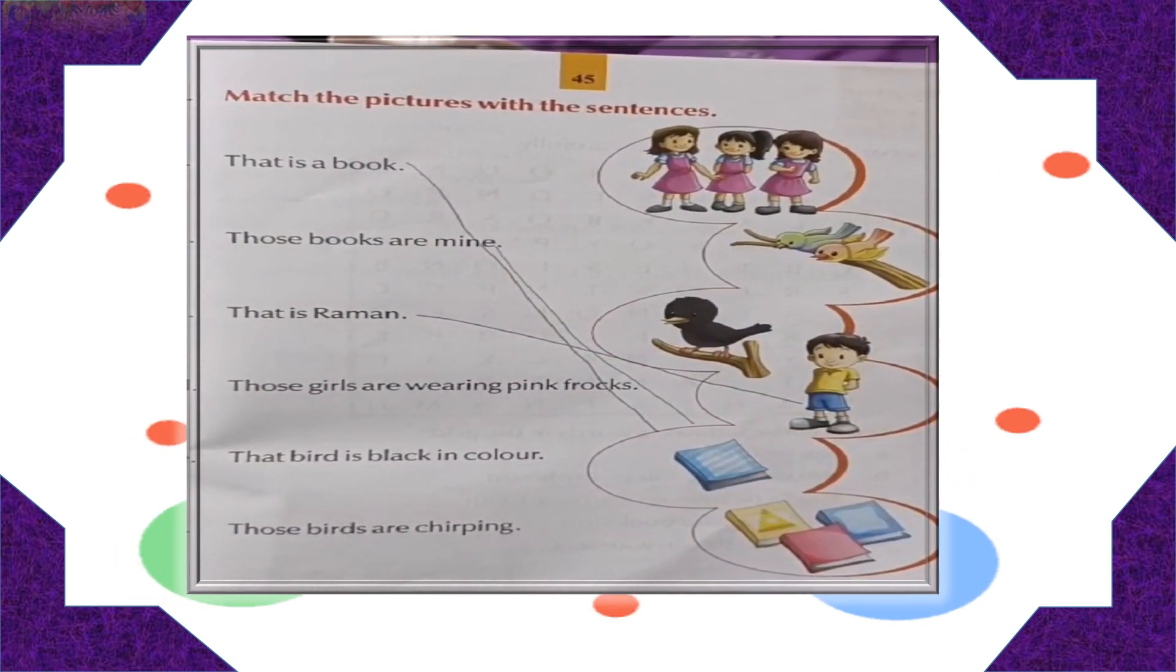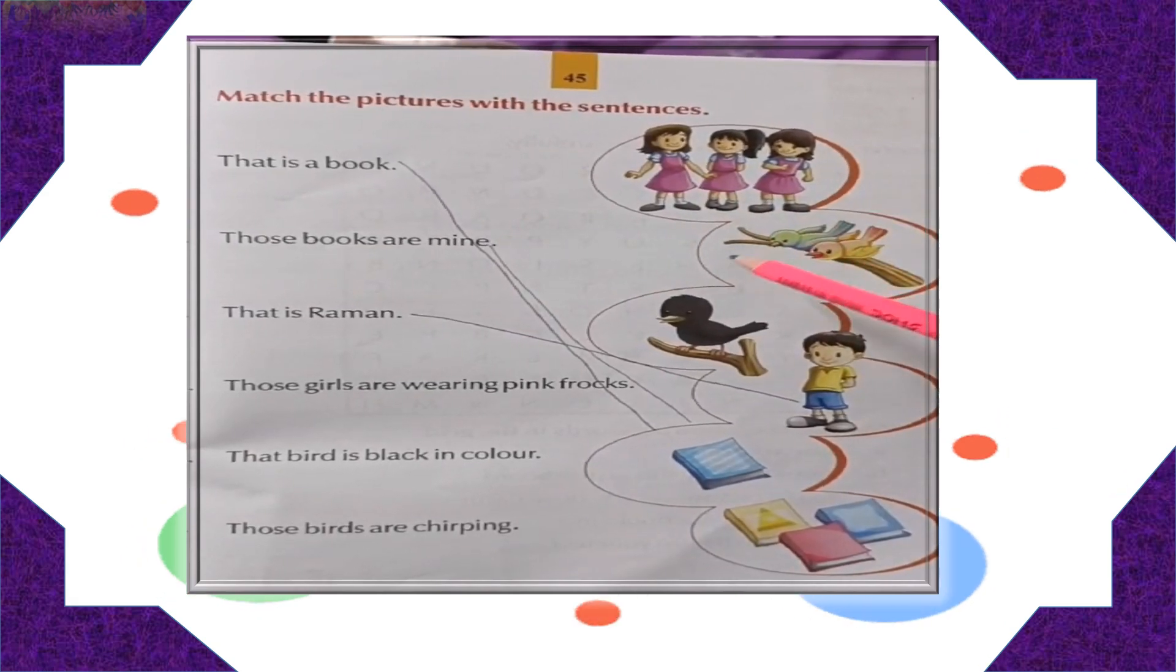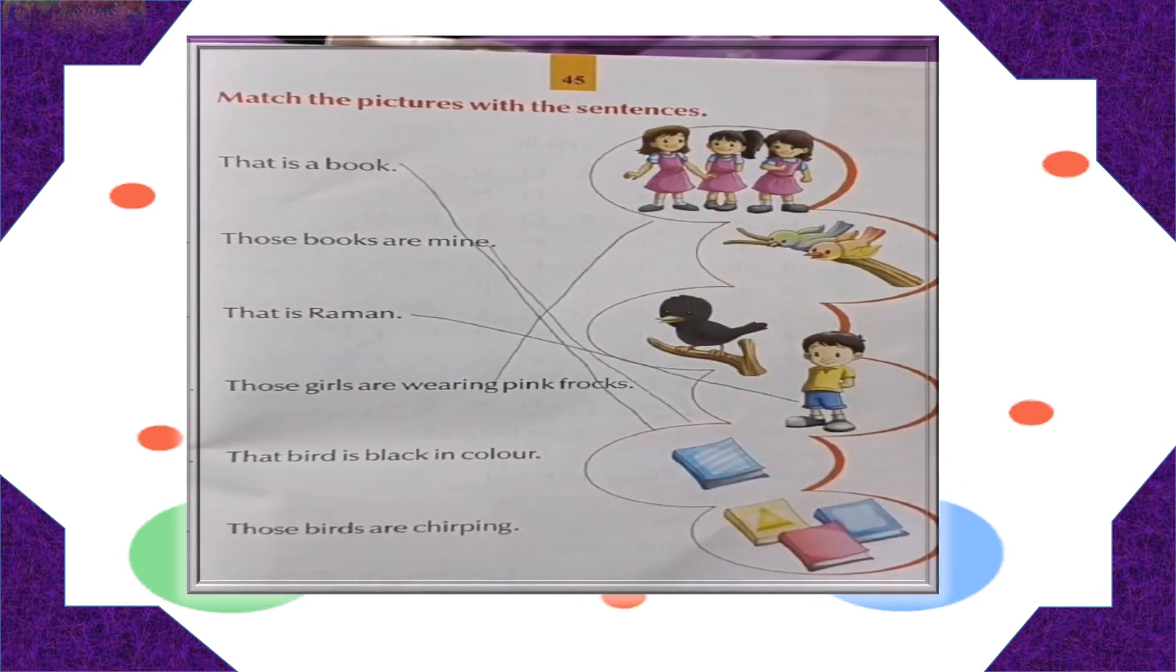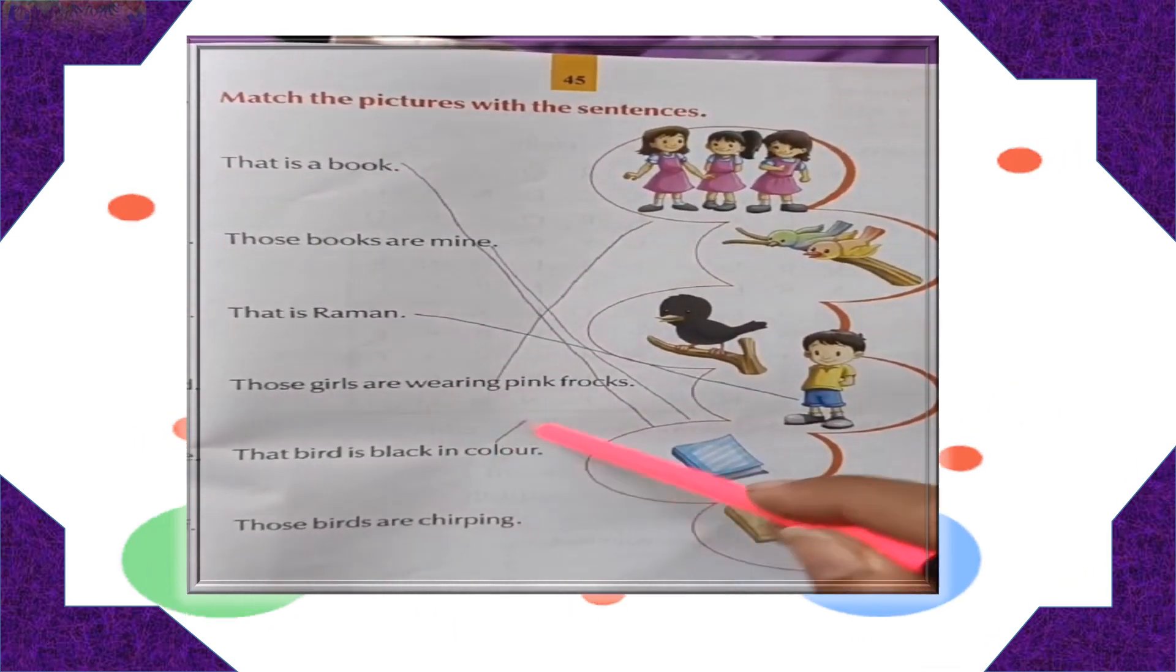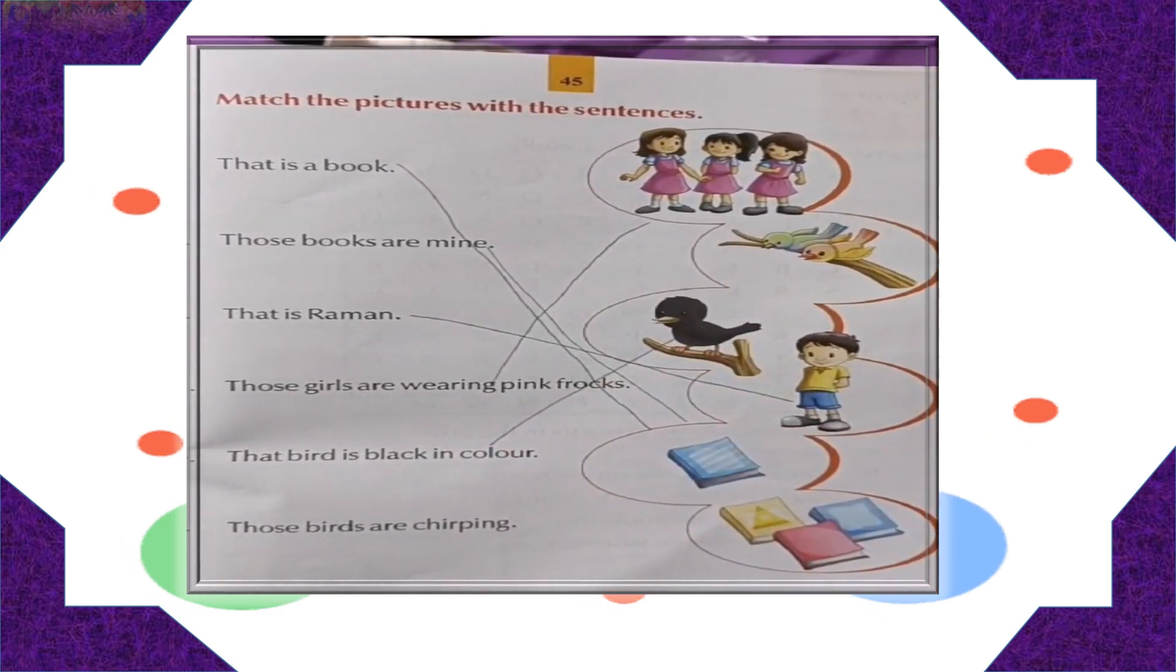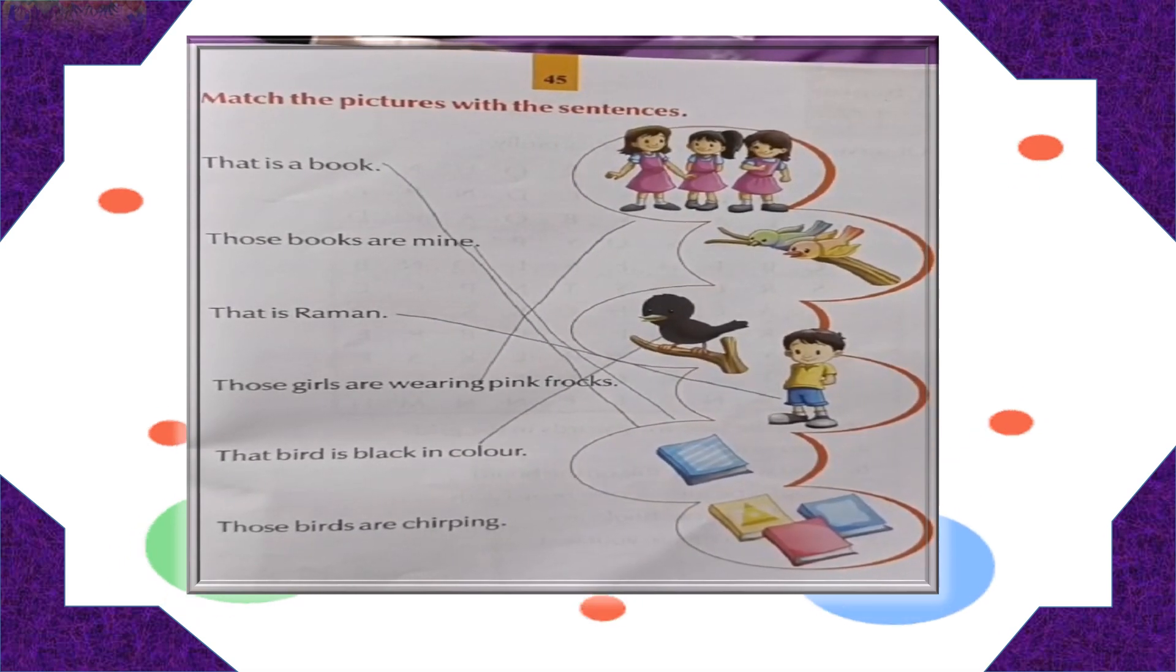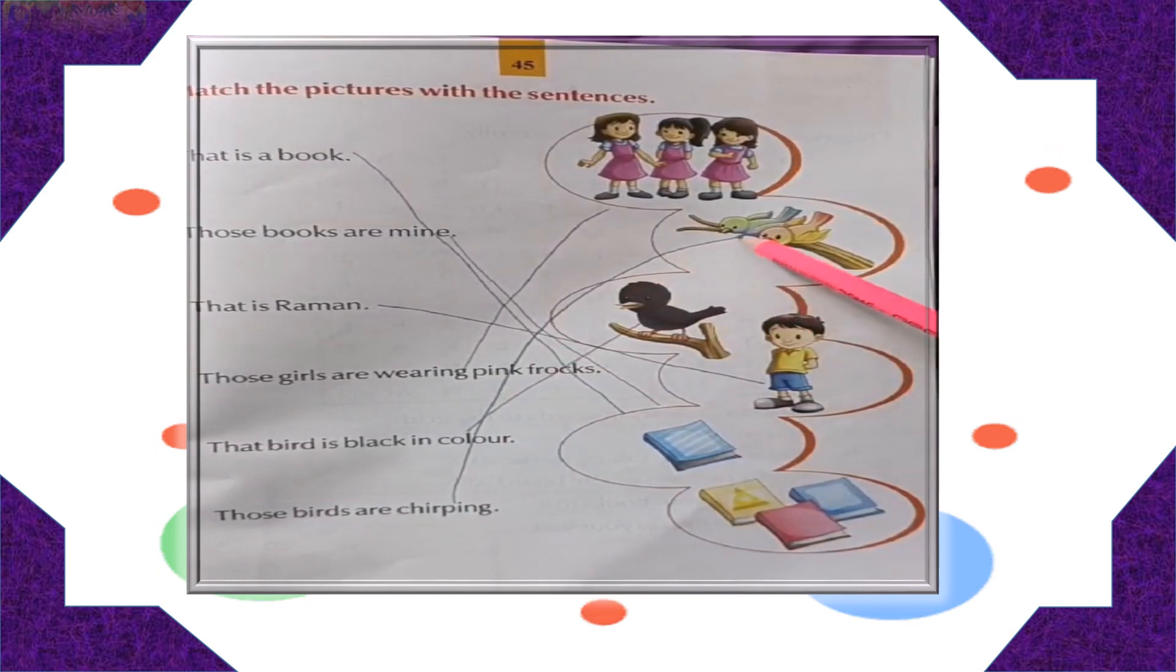Those girls are wearing pink frock. These are the girls wearing pink frock. Let's match it. The bird is black in color. Where is the bird? Here is the bird. Those birds are chirping. You can see more than one bird. Here they are.